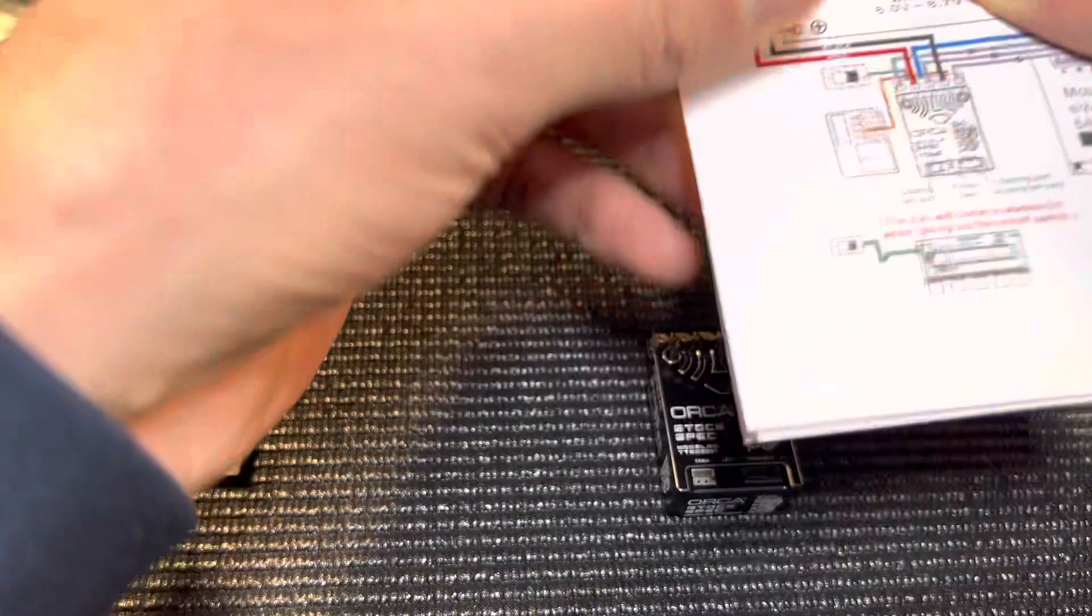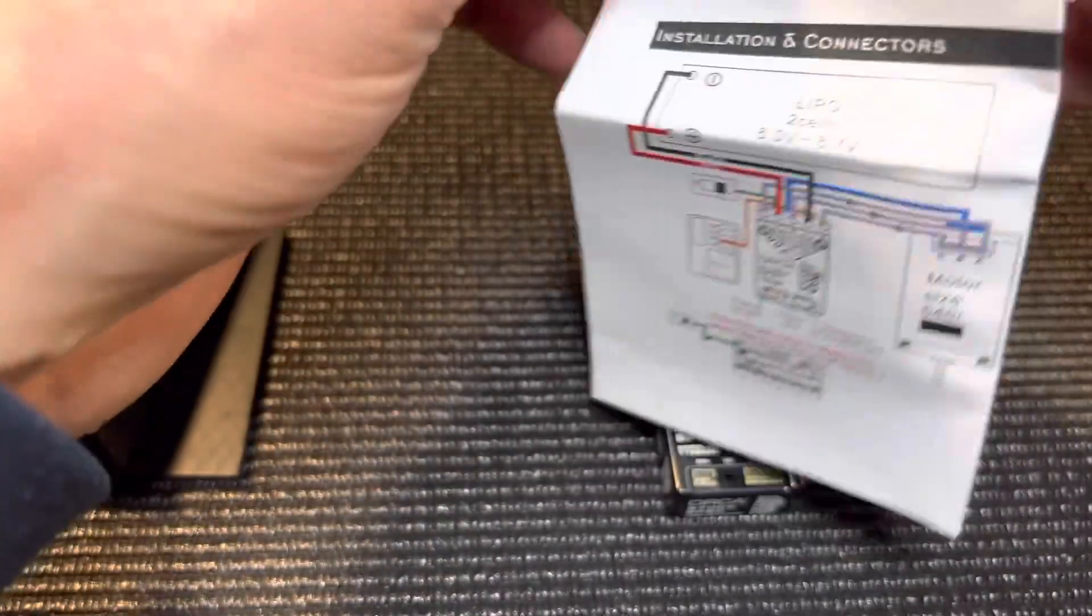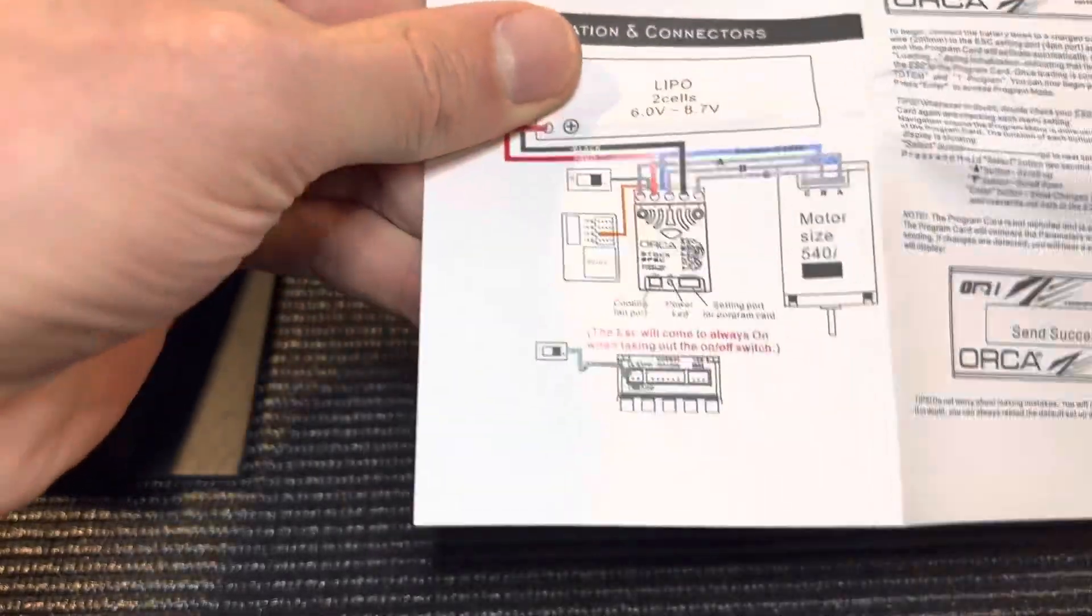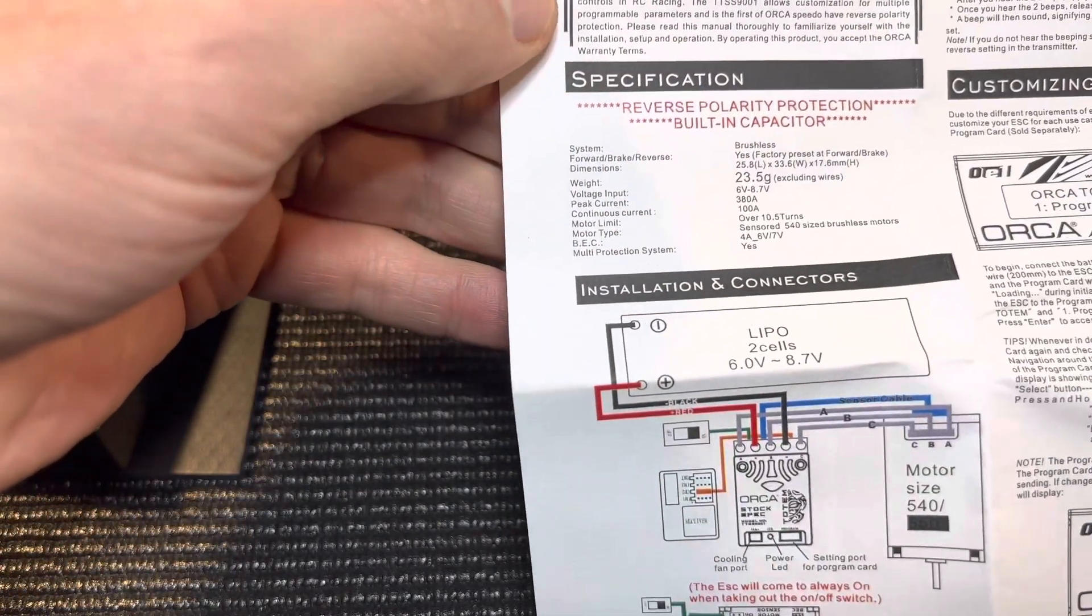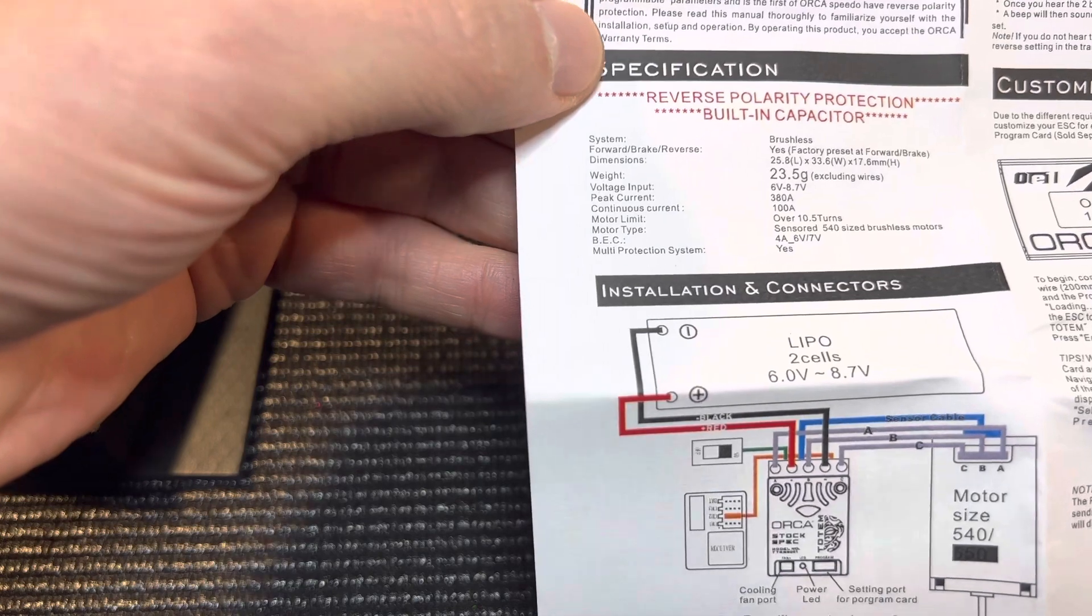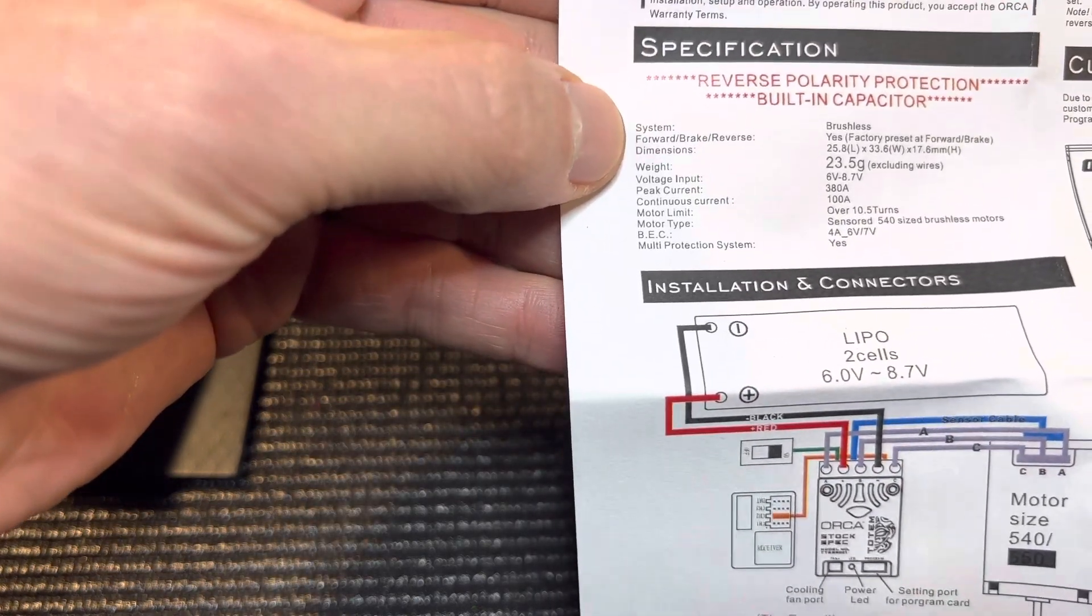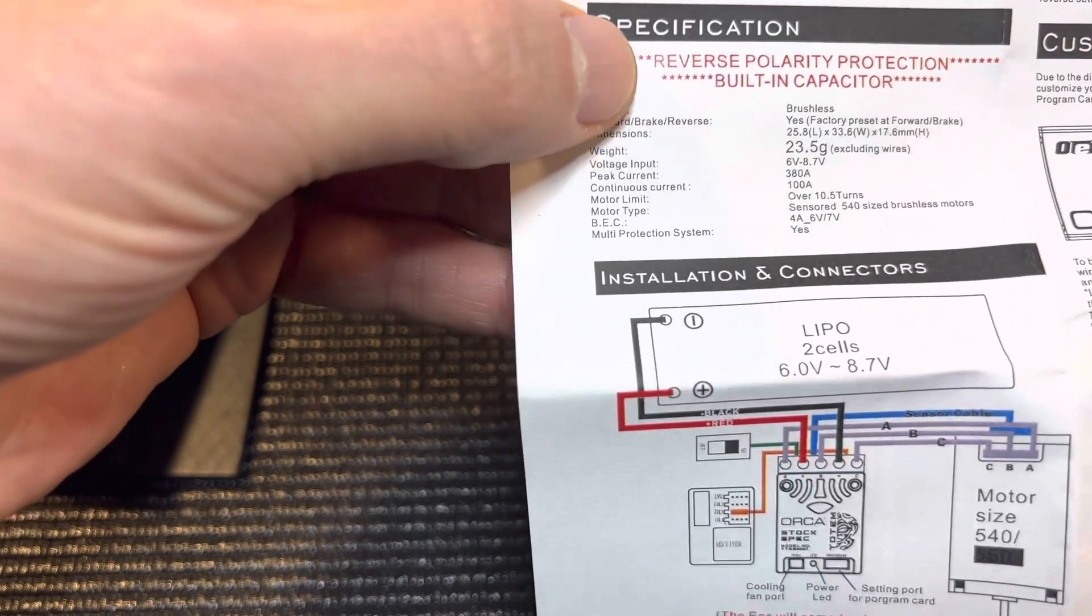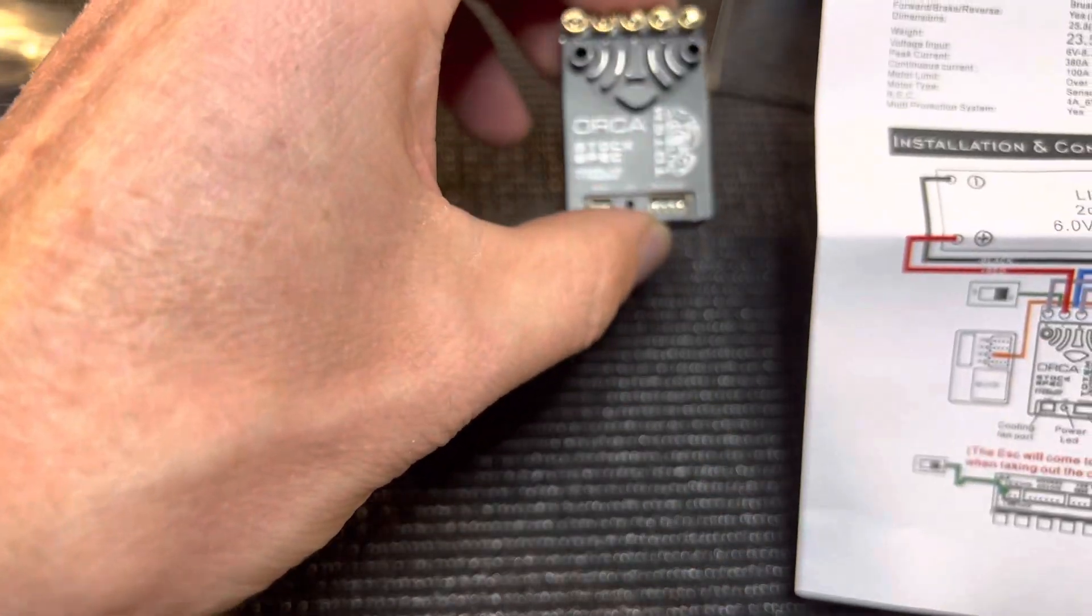Let's have a look. Wow, that small print, my eyes are getting bad these days. I don't know if I'm going to be able to read this and make a video for you at the same time. It's really small. We've got reverse polarity protection in red right here.